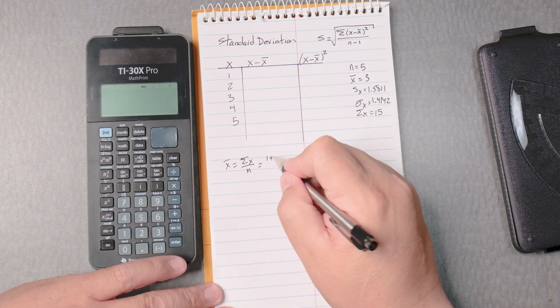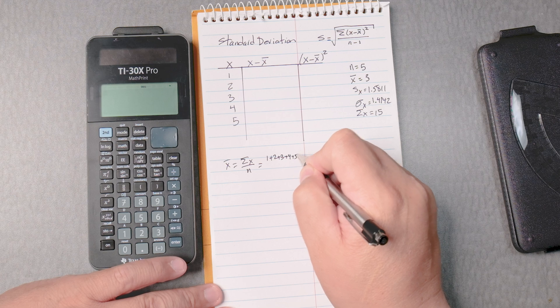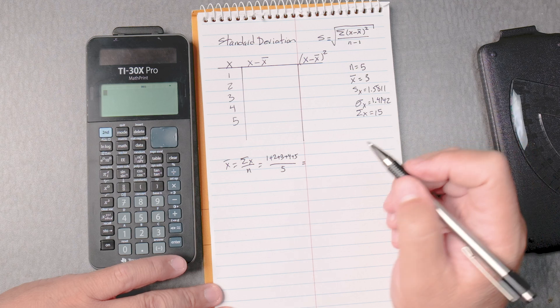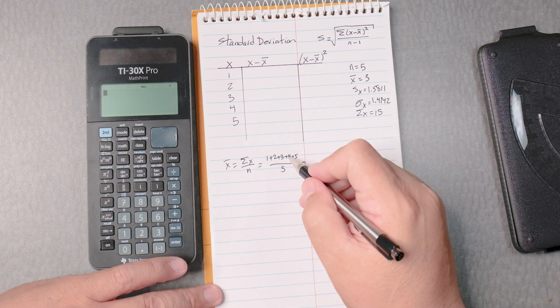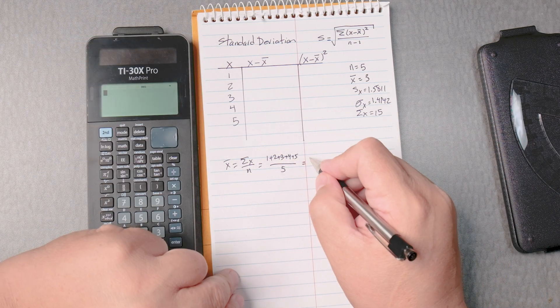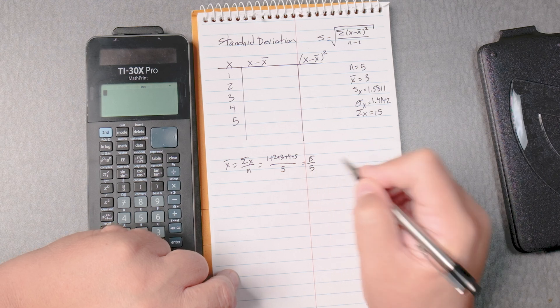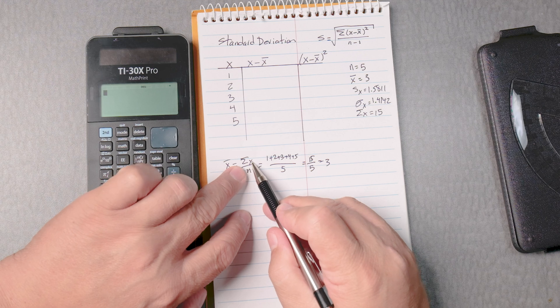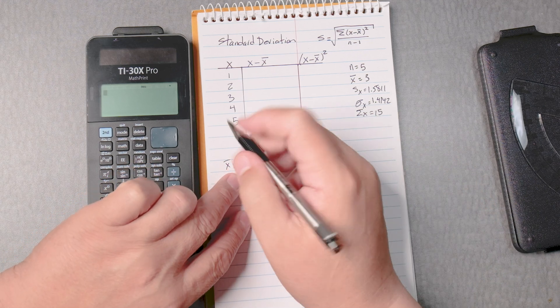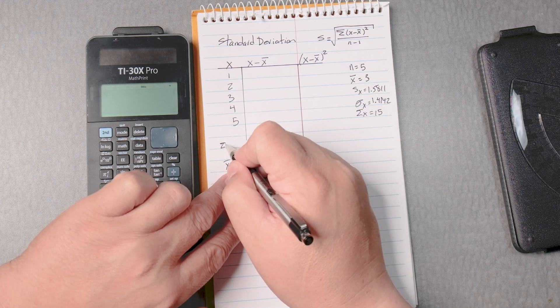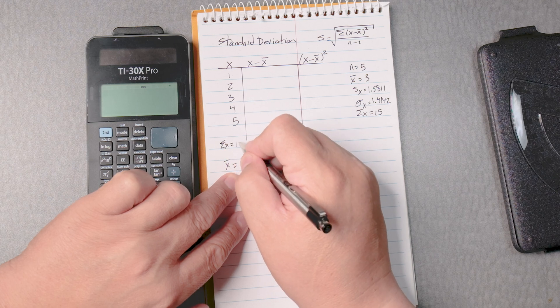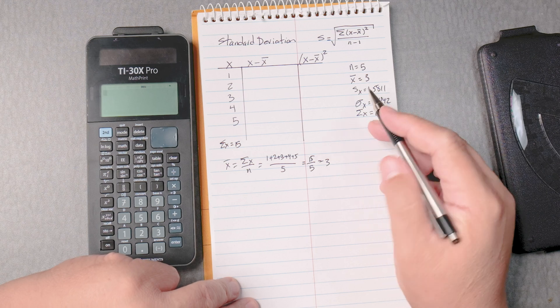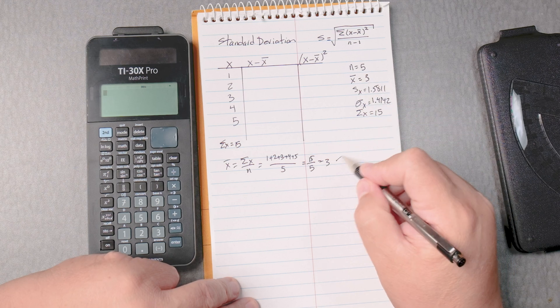So that's 1 plus 2 plus 3 plus 4 plus 5 divided by 1, 2, 3, 4, 5 of them. The sum is 9, 10, 11, 12, 13, 14, 15 over 5. 5 goes into 15, 3 times. As you can see, the sum of x, the calculator gave it to us, which is over here too. The sum of x is equal to 15. So x bar is 3. That's correct from the calculator. The calculator really is to check for your understanding to see if you get this right by hand.